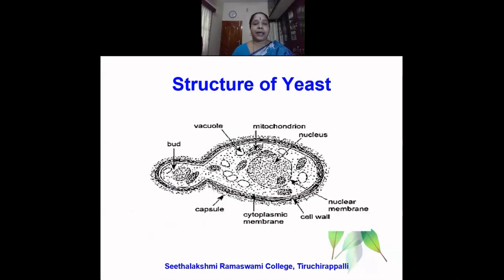Now, this is the classic diagram of the yeast cell. All the cell organelles are present in the yeast: vacuole, mitochondria, nucleus, nuclear membrane, there is a cell wall, cytoplasmic membrane, and a capsule also.